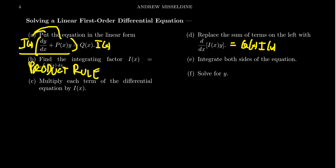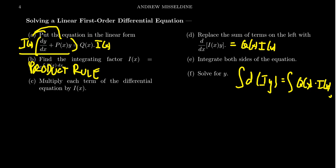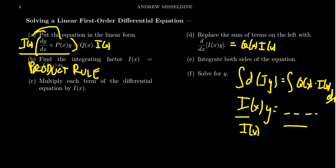Then you integrate both sides. You integrate d(i·y), which equals the integral of q(x) times i(x) dx. The left-hand side will always become i(x)·y. The right-hand side is something you compute. To solve for y, all you have to do is divide both sides by i(x). It is simple and amazing — this integrating factor, how convenient and simple it is.